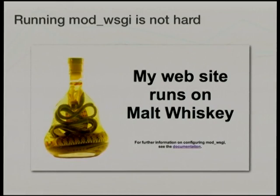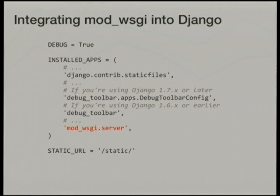To run it with an actual WSGI application, you supply the path to the WSGI script file. You can also use the '--help' option to get information on all command line options for changing the host and port, specifying a directory of static assets, and so on. Documentation is on PyPI. Because we are using Django though, rather than pointing mod_wsgi-express directly at a WSGI script file, it's better to integrate it into Django itself, by adding 'mod_wsgi.server' into Django's installed applications list.